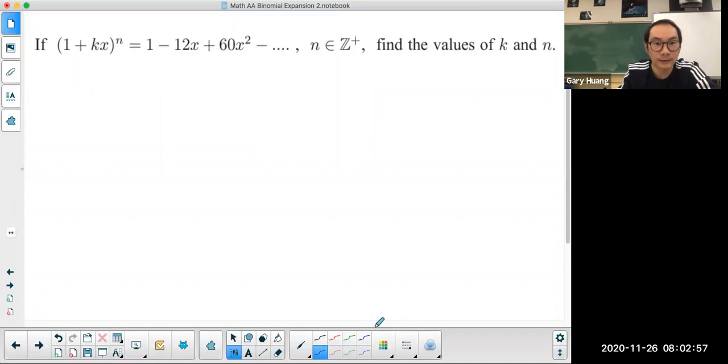Welcome to Math with Wong. Today we're going to look at this particular question where they give you two unknowns and you're asked to find the values of both k and n.